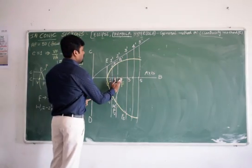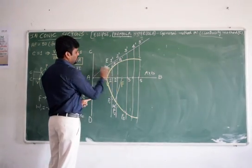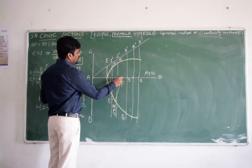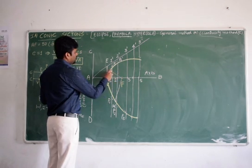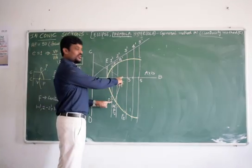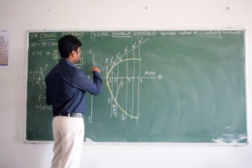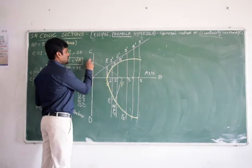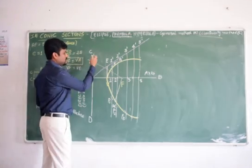Now draw a perpendicular line to MF touching this directrix line. Or draw a 90 degree line to this MF. So it touches this, give some naming as G dash.